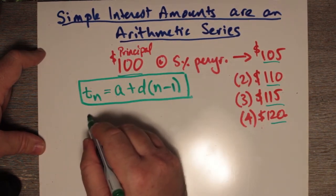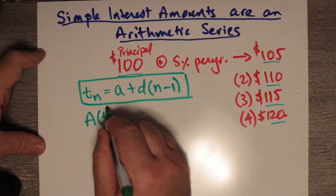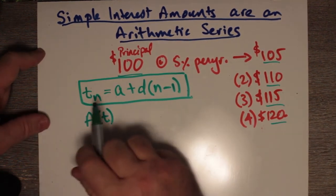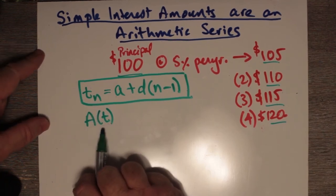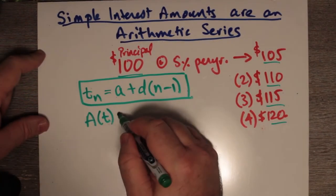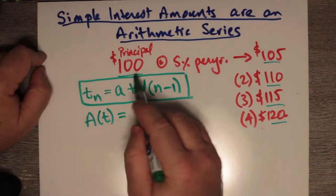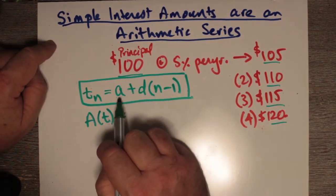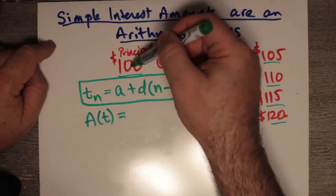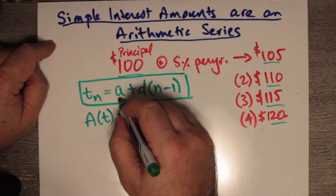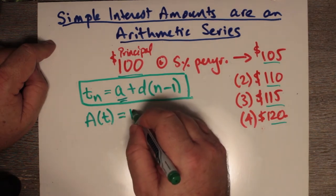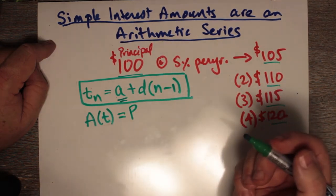Well, in chapter 7, this is the amount at time t. So we're expressing this as a function of time now. So that's A(t). This equals our initial investment. The first term in this series, if we go $100, $105, $110, $115, $120, the principal amount is our first term. So that's our principal, I'll call it P.